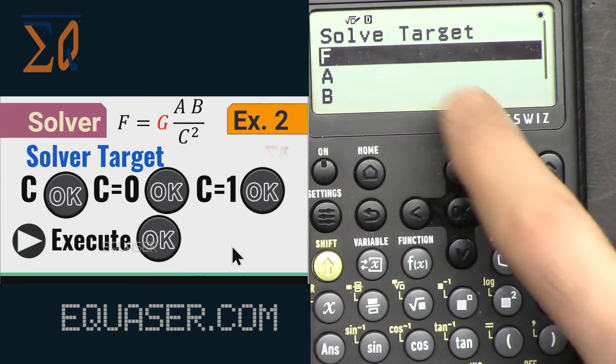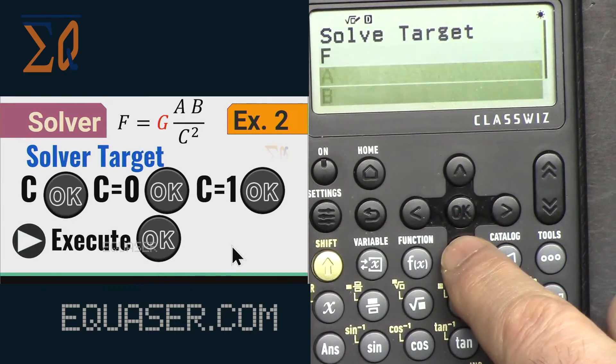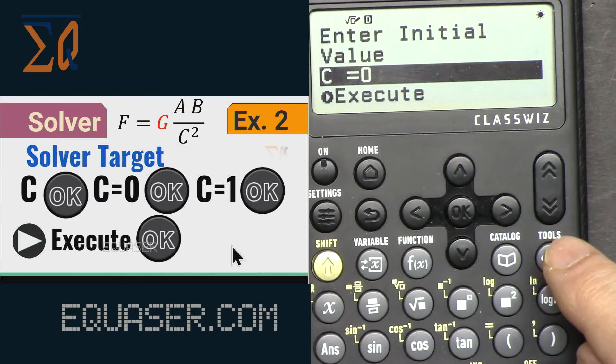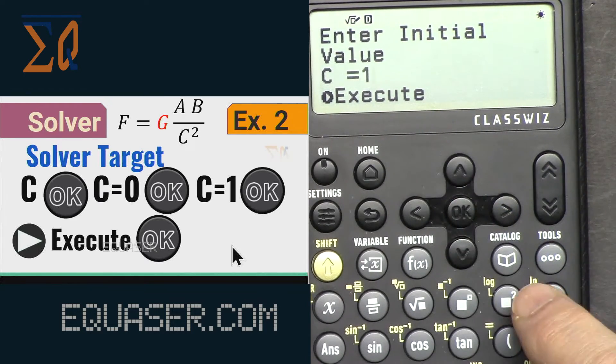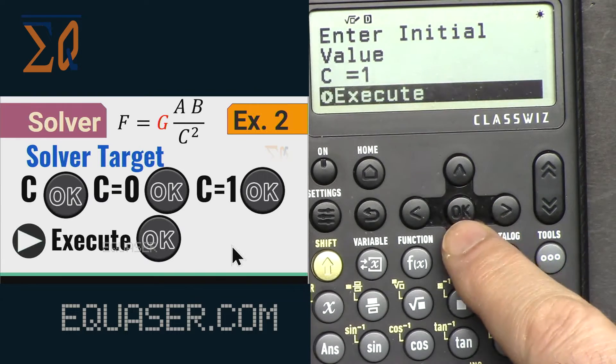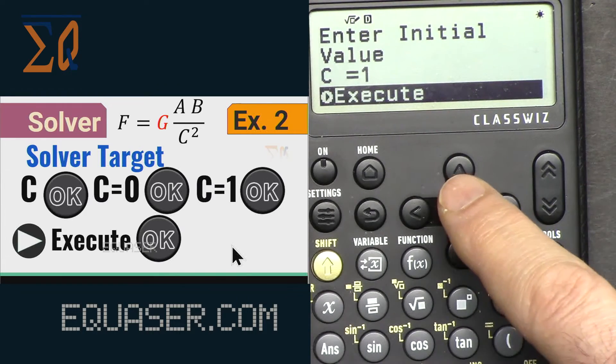And then execute. Now we have all the formula, all the elements of the formula. And then what is the target? Go down, target is c, selected, and then initial value, click and okay, and then execute.